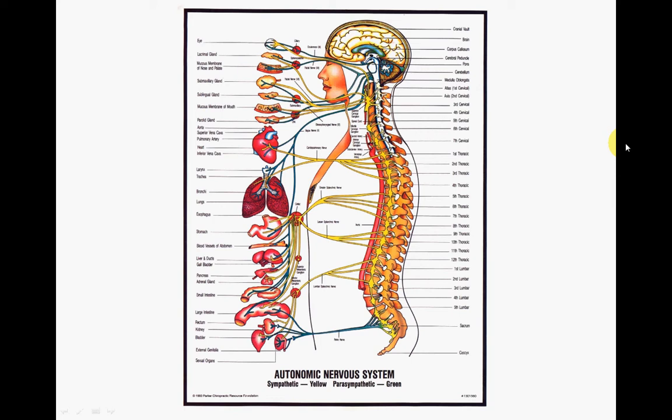The spinal cord is part of the central nervous system. It is a segmented structure, and each segment sends sensory information to the brain and receives motor commands from the brain.